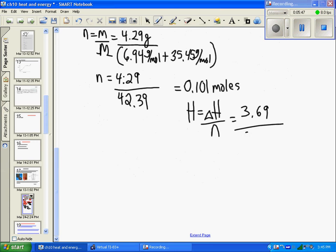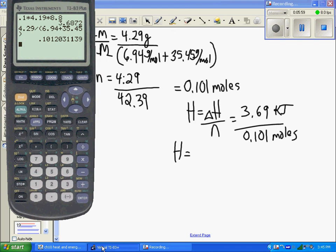For H, we're going to get about 36.9. Taking 3.69, dividing by the 0.101 moles we just calculated, we get 36.43 kilojoules per mole.